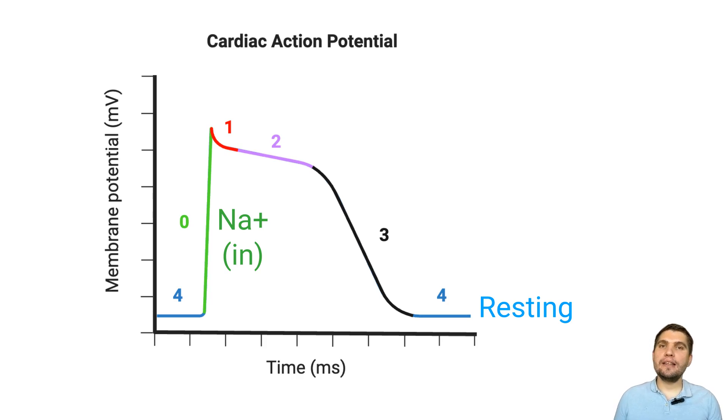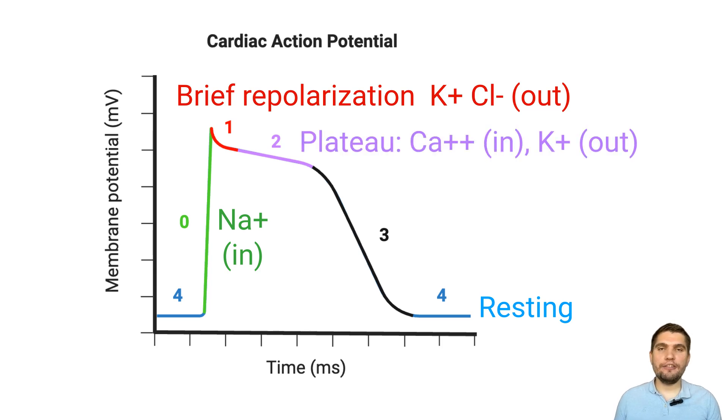Afterward, the cell goes through phases of brief repolarization, phase 1, plateau, phase 2, driven by calcium influx, and finally, repolarization, phase 3, with potassium leaving the cell. Now, returning back to the resting potential in phase 4.